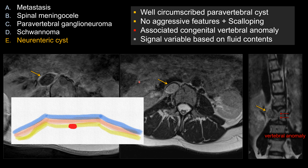The reason why the classic appearance of a neuroenteric cyst is a paraspinal cystic mass with adjacent vertebral body anomaly may be explained as follows. During development, recall you have three germ cell layers: ectoderm, mesoderm, and endoderm.